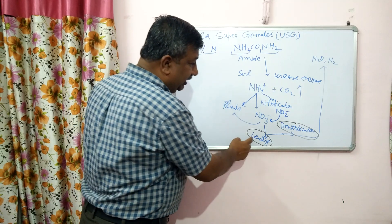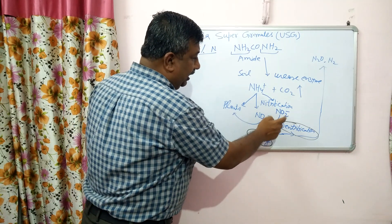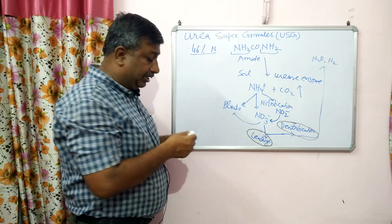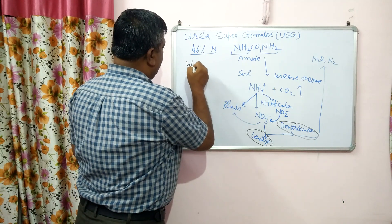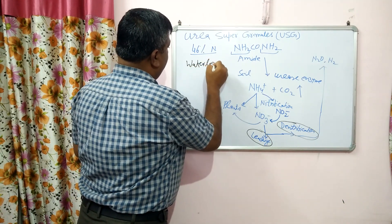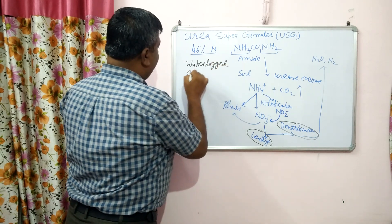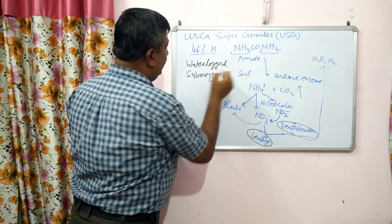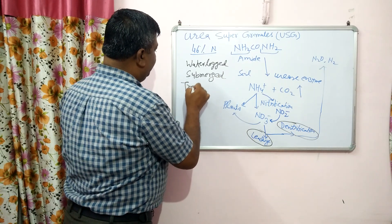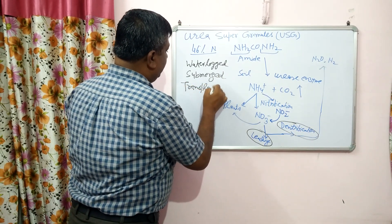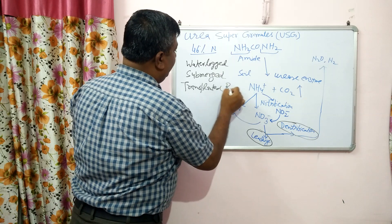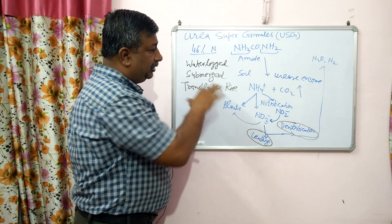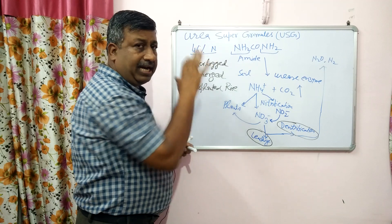These problems of leaching and denitrification are more severe in waterlogged, submerged, or transplanted rice fields where water is continuously maintained. So this is the problem when urea is used as such in such conditions.